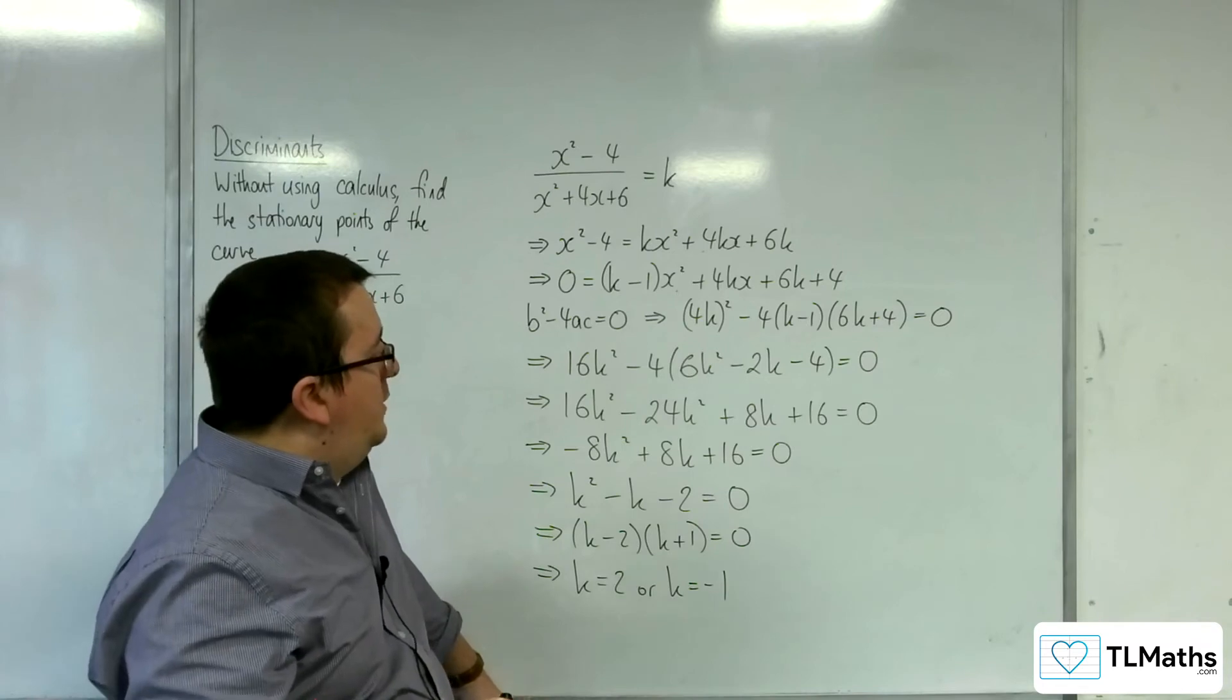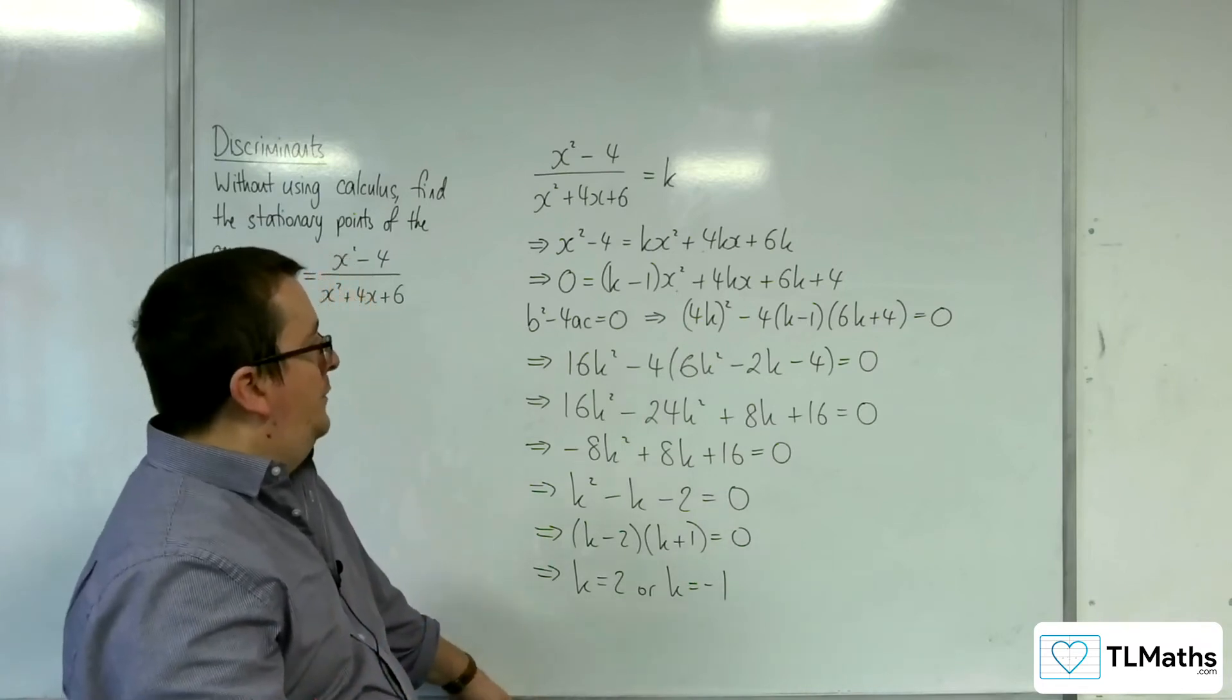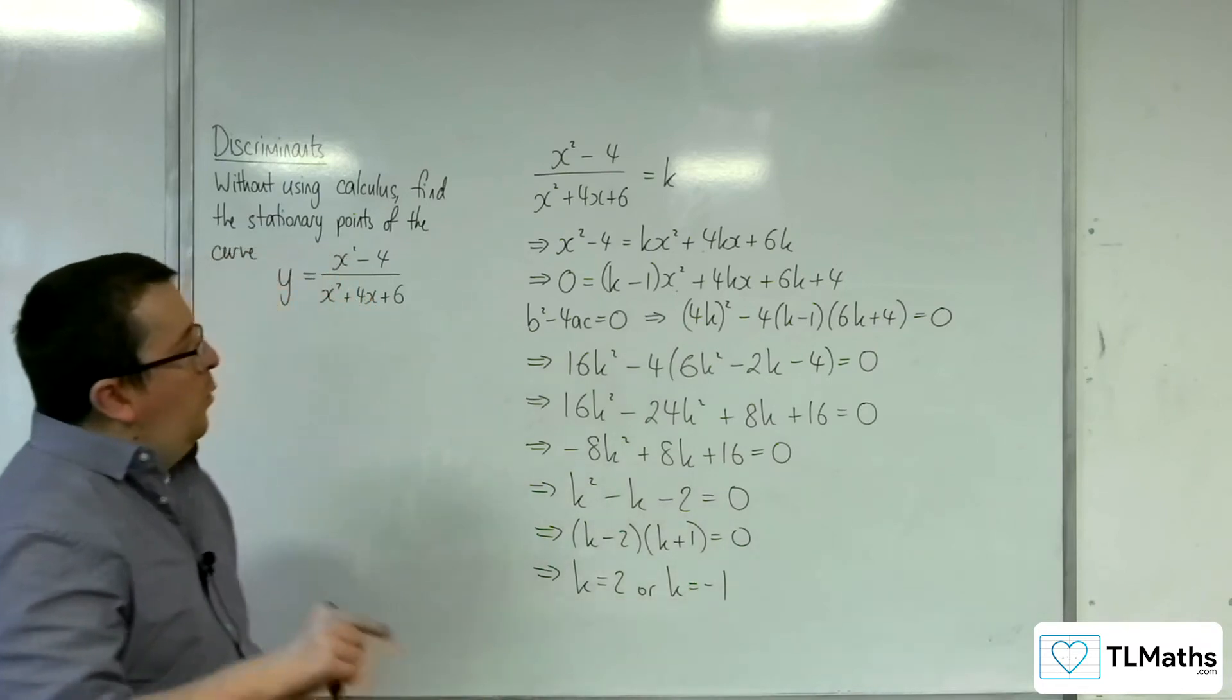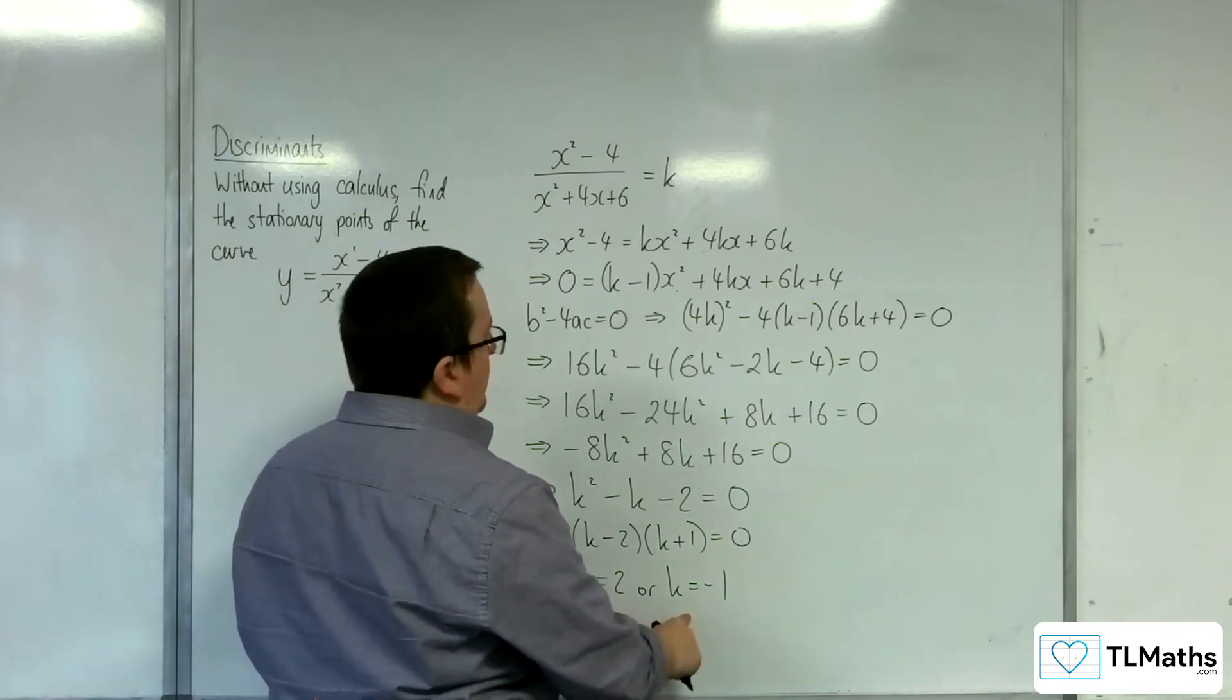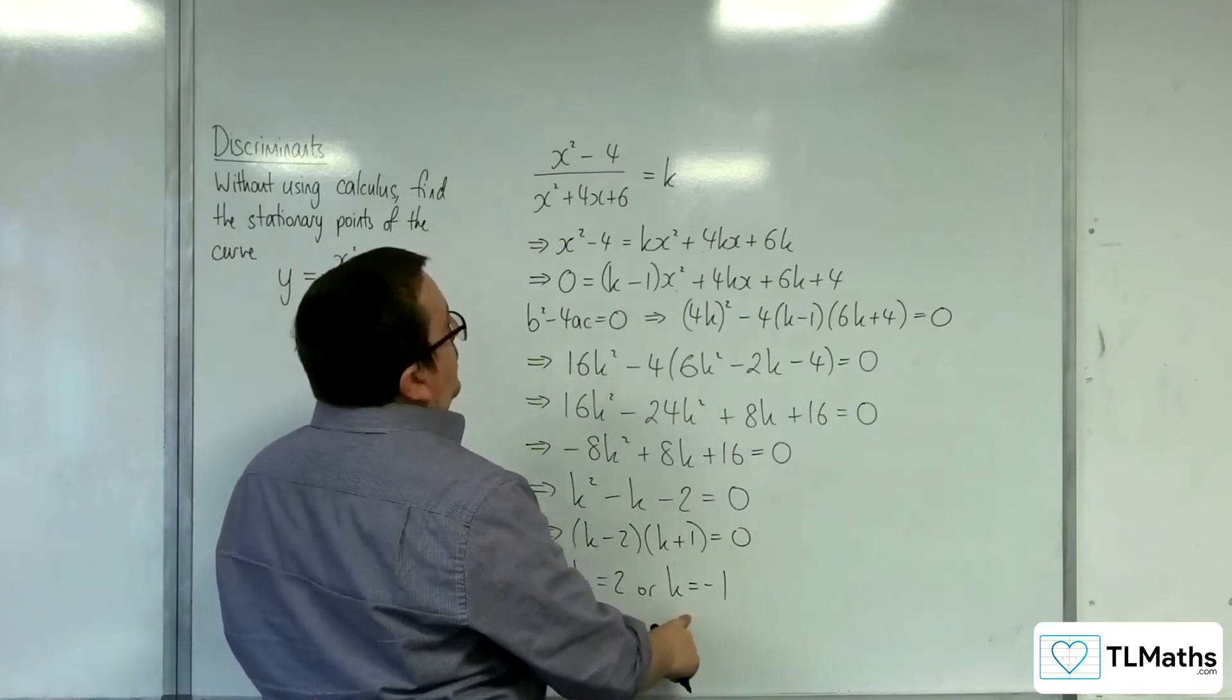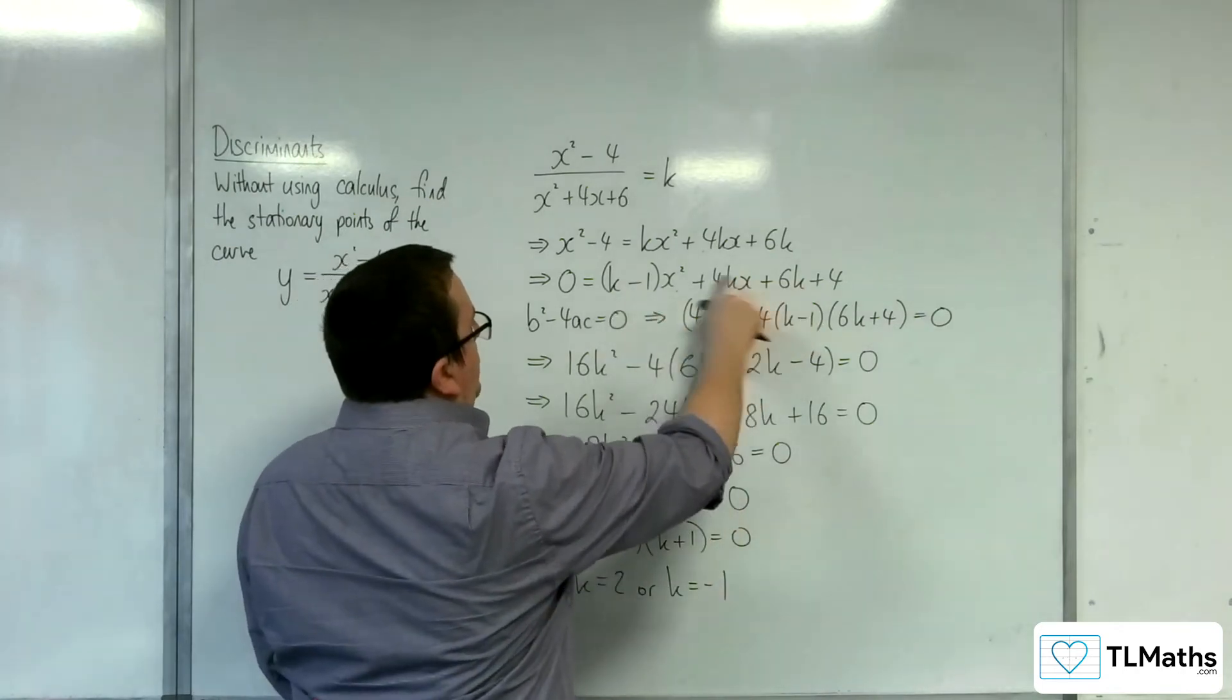So what you need to do is then work out the x values. Now the way to do that is to substitute these values of k back in to your quadratic that you have here.